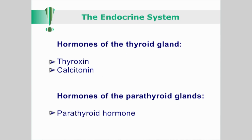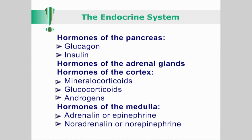The thyroid gland secretes thyroxine and calcitonin. The parathyroid glands secrete parathyroid hormone. The pancreas secretes glucagon and insulin. The adrenal glands have two distinct regions: the cortex, which secretes the mineralocorticoids, glucocorticoids and androgens; and the medulla, which secretes adrenaline, also called epinephrine, and noradrenaline, also called norepinephrine.